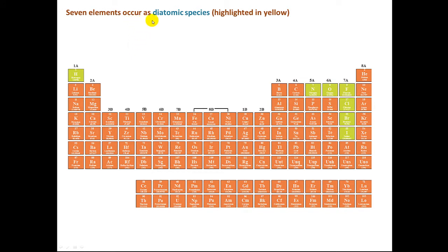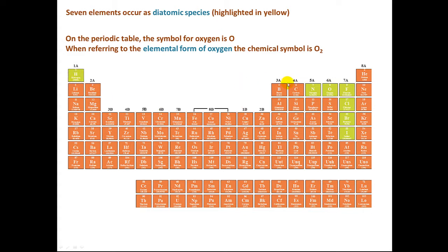There are seven elements that occur as diatomic species, and you should memorize those. Here they're highlighted in yellow: hydrogen, nitrogen, oxygen, fluorine, chlorine, bromine, and iodine. For example, on a periodic table, the symbol for oxygen is a capital O. But when we refer to the elemental form of oxygen, the symbol is a capital O with a subscript 2. And again, that's because the most stable form of oxygen is as a diatomic molecule.